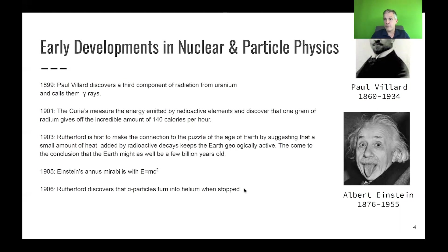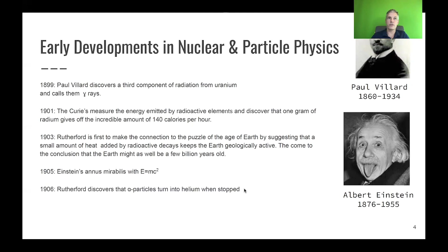Putting this in context: at that very same time, in Bern, Switzerland, a clerk named Albert Einstein had a fantastic year. In one year he came up with a sequence of theoretical discoveries, including special relativity, and he used those findings to derive the equivalence between energy and mass. This equivalence, as we'll see when we discuss nuclear physics specifically, is very important for understanding nuclear decays, nuclear fission and fusion, and why compound states can appear lighter than the sum of their individual components.